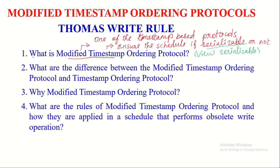Let us now discuss what is modified timestamp ordering protocol. Thomas Wright Rule and modified timestamp ordering protocol are the same. Thomas Wright Rule is also called modified timestamp ordering protocol. It is one of the timestamp based protocols that ensures whether the schedule is view serializable or not.